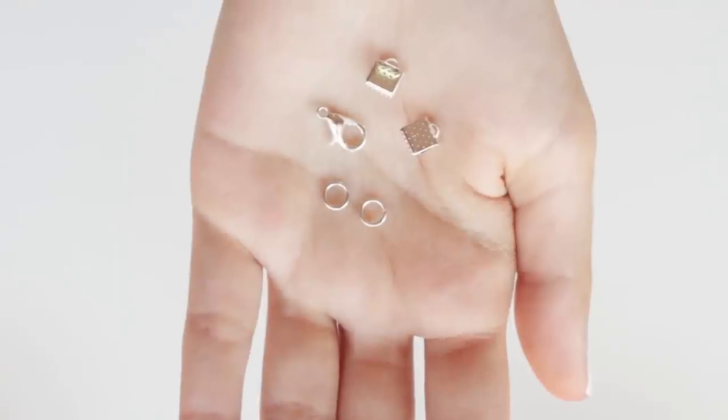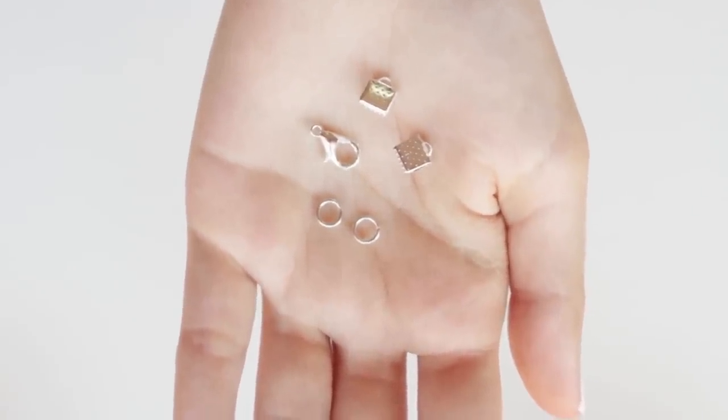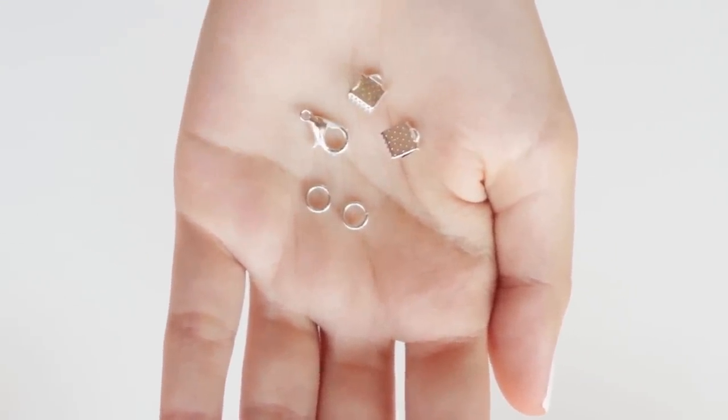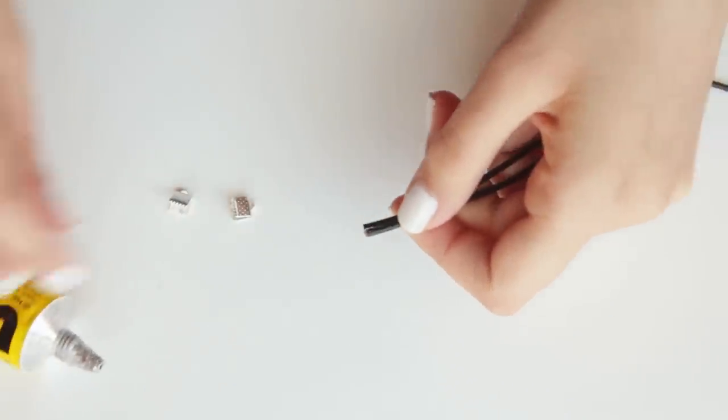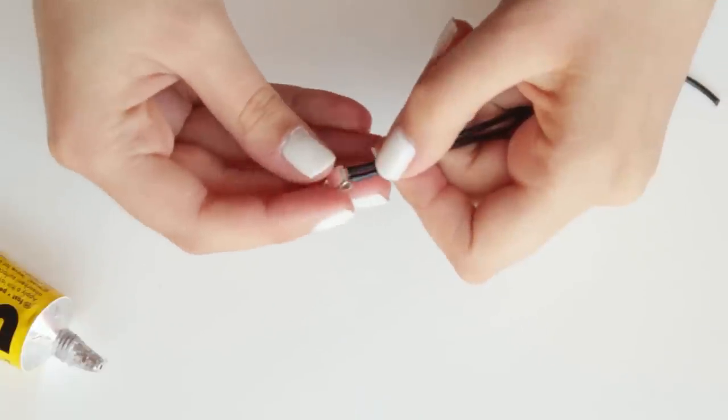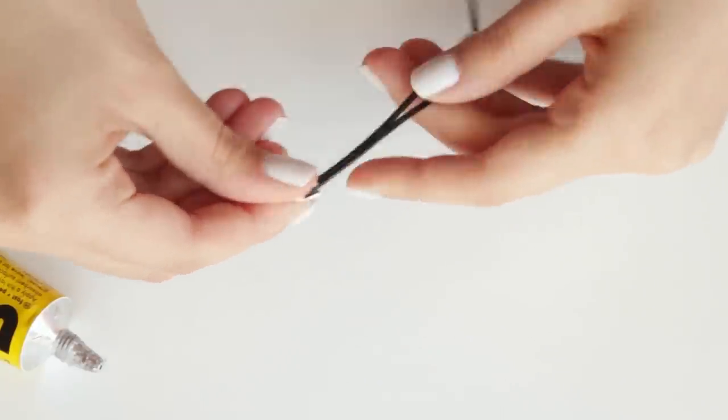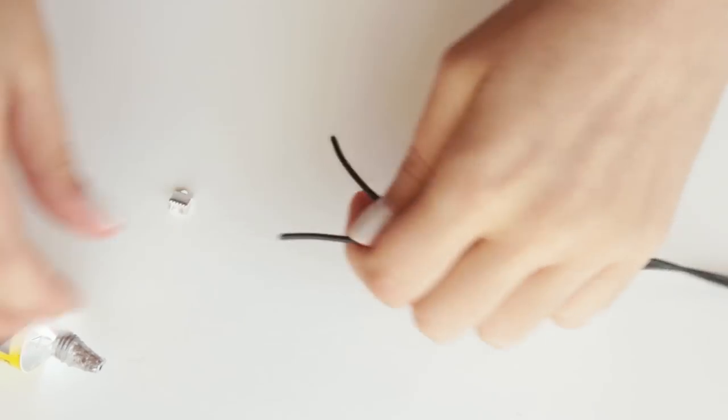To close this one I'm gonna use these small crimp ends, as well as a lobster clasp and jump rings. So to help secure it, put a drop of glue on the cords and place them inside the crimp end, closing it with the help of pliers.